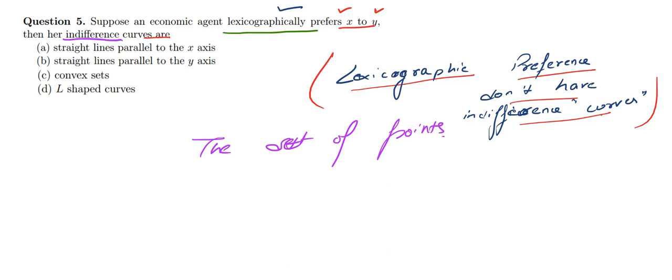For her indifference curve, the set of all the points—we don't have any curve, but we have some points where this agent is indifferent. These points will form a singleton.